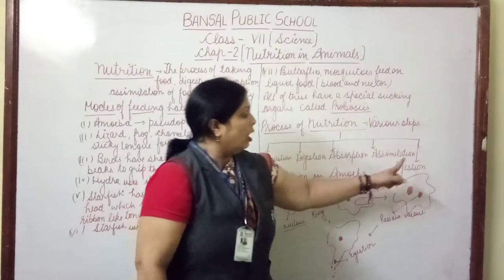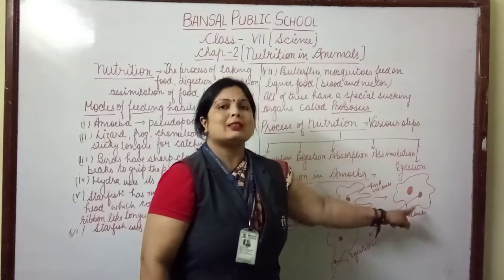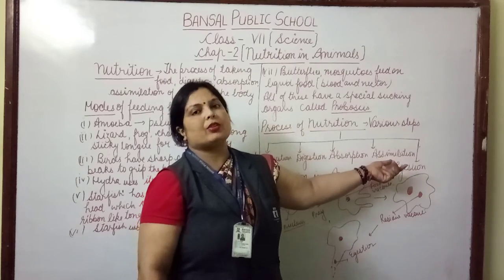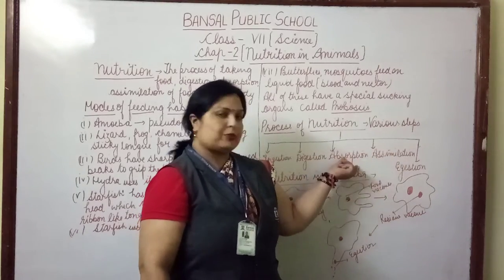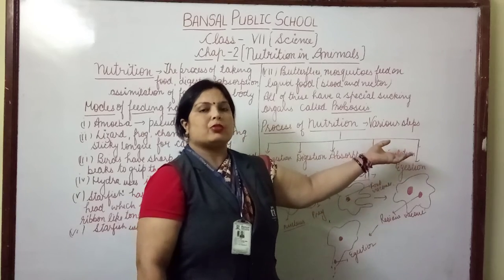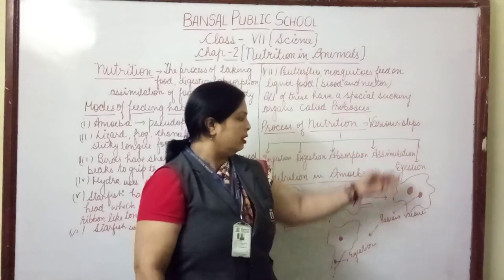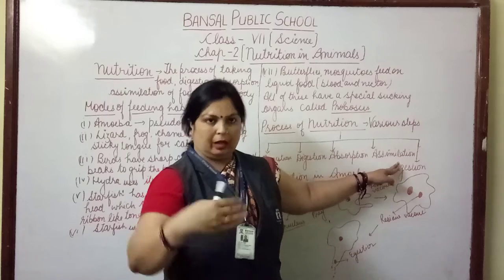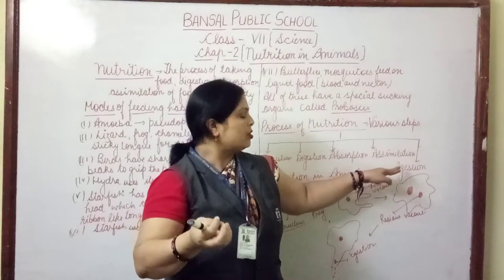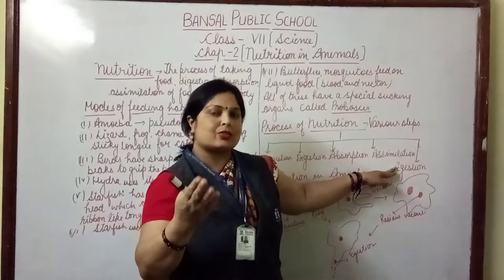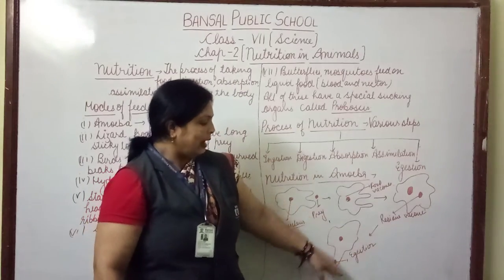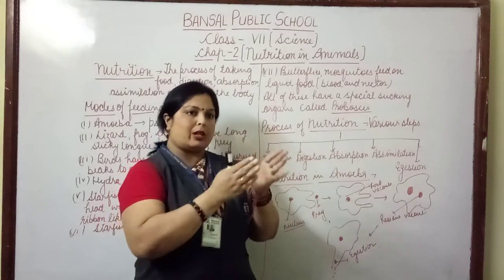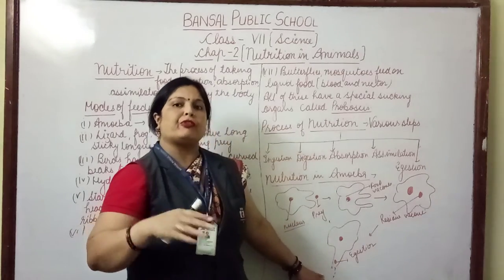Assimilation means the utilization of absorbed and digested food for the processes of growth, repair, and reproduction of the amoeba body. This also takes place in the cytoplasm. Undigested food — food which could not be digested — comes to the body surface, the body surface bursts open, and the undigested food is removed from the body of amoeba.